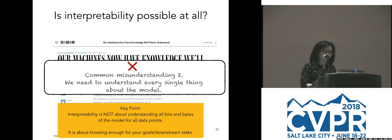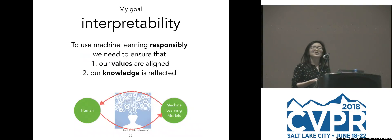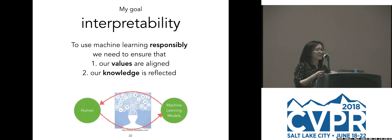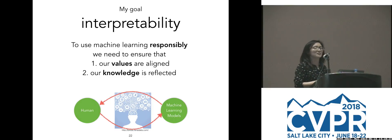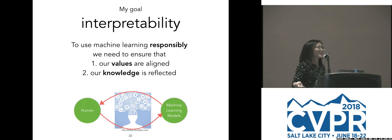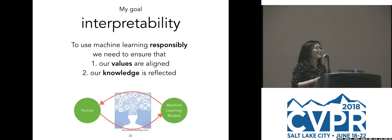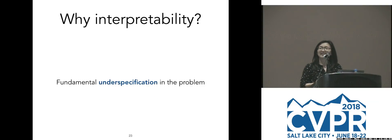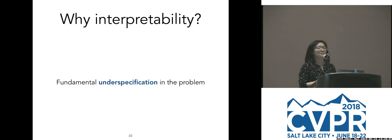But I can share what my goal is. My goal is to use machine learning responsibly. This means to me that models reflect the values I care about, like fairness, and that they can reflect domain experts' knowledge — like doctors' years of field experience in the model. So this is cool. We have a goal. Now we can just write down the math equations for what this means and optimize for it, right? Well unfortunately, these things we want to achieve are hard to write down in math because it's a fundamentally underspecified problem.